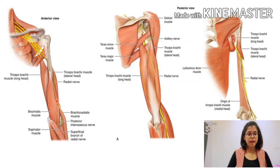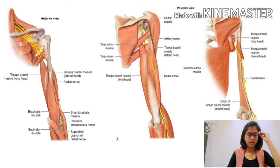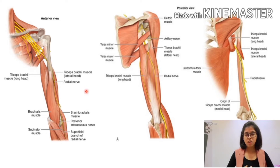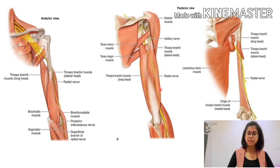Proceeding from here, the nerve will leave the radial sulcus by piercing the lateral intermuscular septum, and then it will lie between two sets of muscles — the brachialis muscle being on the medial side, and brachioradialis along with extensor carpi radialis longus on the lateral side. From here, the nerve then enters the cubital fossa.